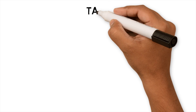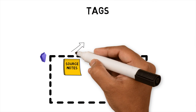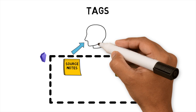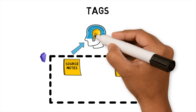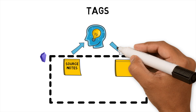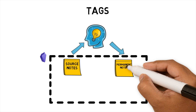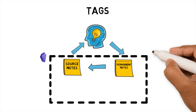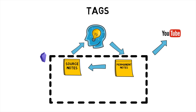Tags. I use tags to describe the contents of a source note conceptually. As a content writer there is a need to identify and evaluate keywords. Tags provide a way to do that and also act as a starting point for permanent notes.